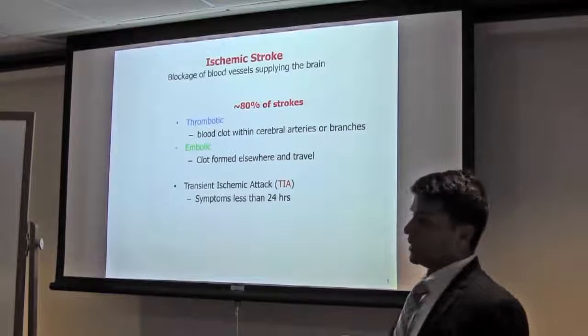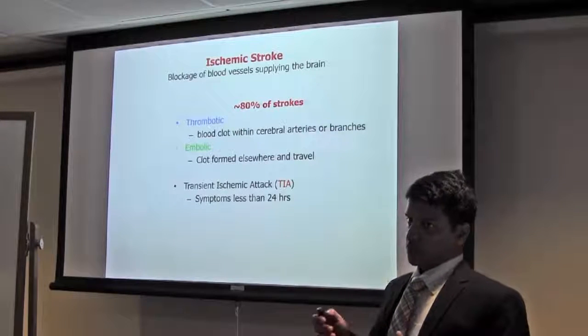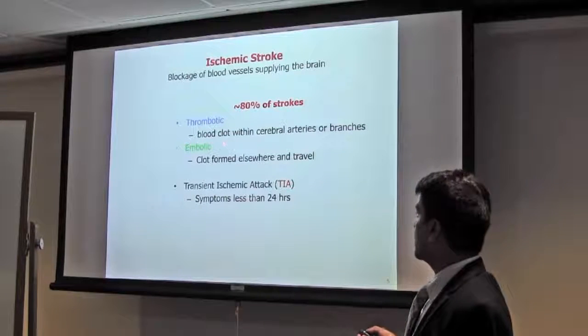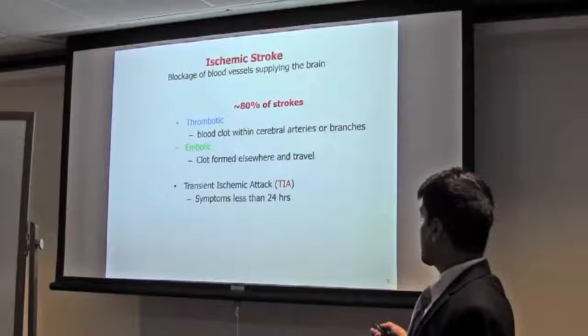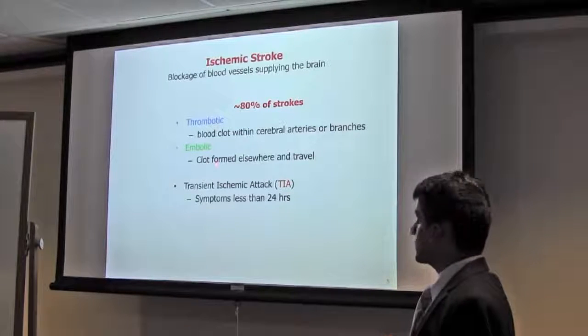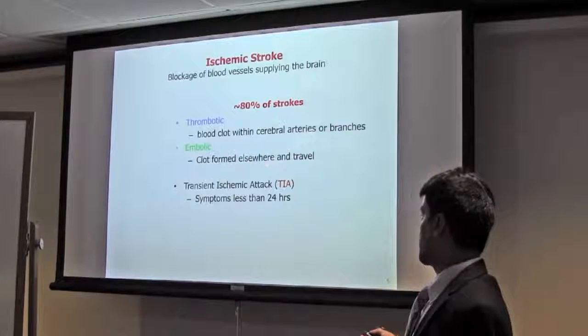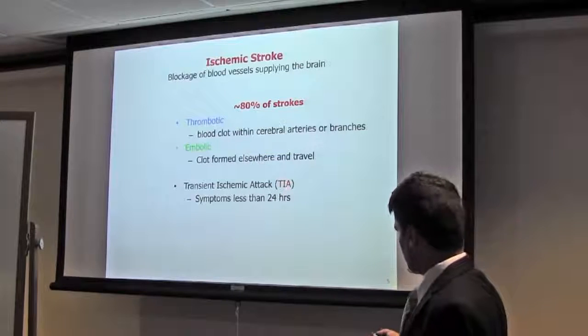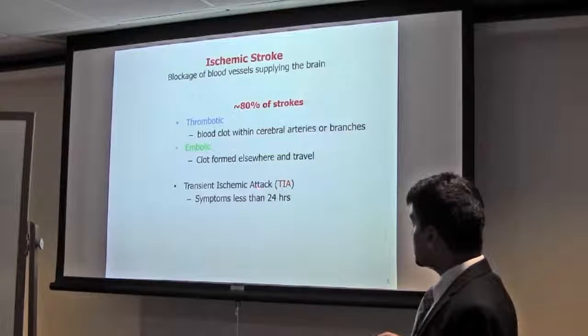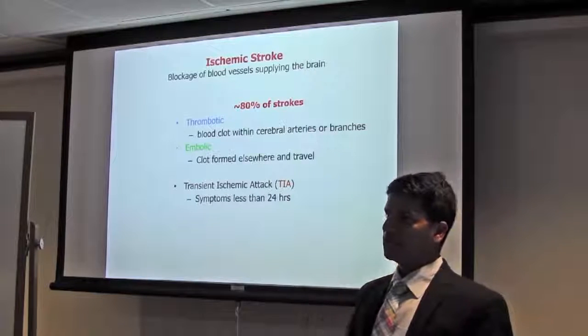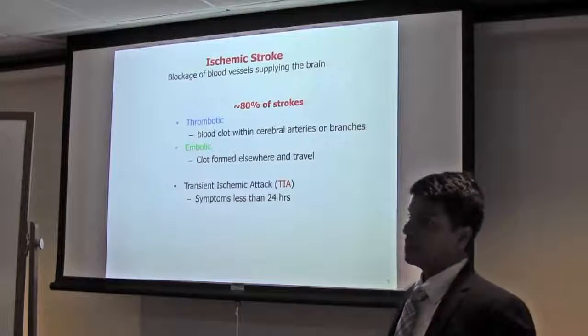Ischemic stroke is about 80% among total stroke. It can be thrombotic, when blood clot forms within the cerebral arteries or branches, or embolic, when clot forms outside the brain and travels to the brain and blocks. There is also transient ischemic attack (TIA), which persists less than 24 hours, also known as mini attack.